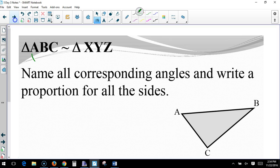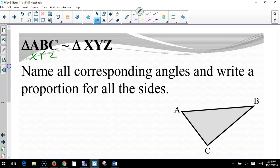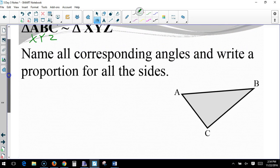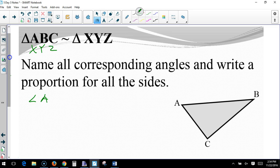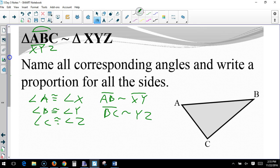Okay. ABCXYZ. I'm going to write underneath. Take all the corresponding angles and write the proportion for these sides. So, we can do that right up here. Angle A is congruent to angle X. Angle B is congruent to angle Y. And angle C is congruent to angle Z. Now, besides, AB right here is similar to XY. BC is similar to YZ. And AC, XZ. And now, B. Similar.